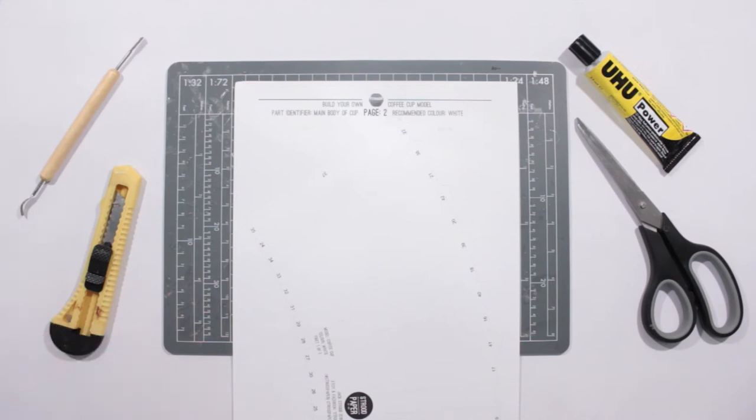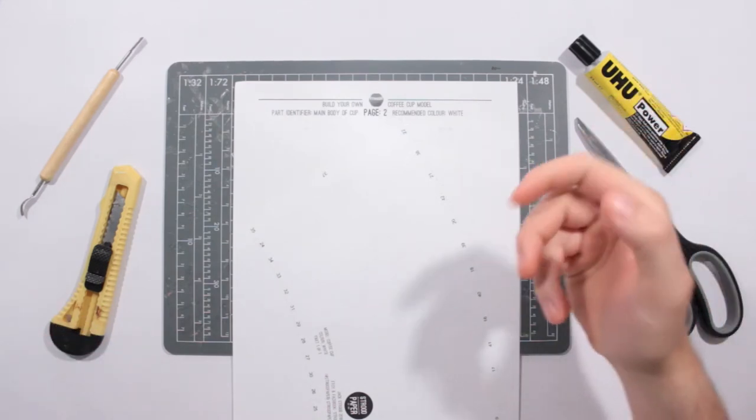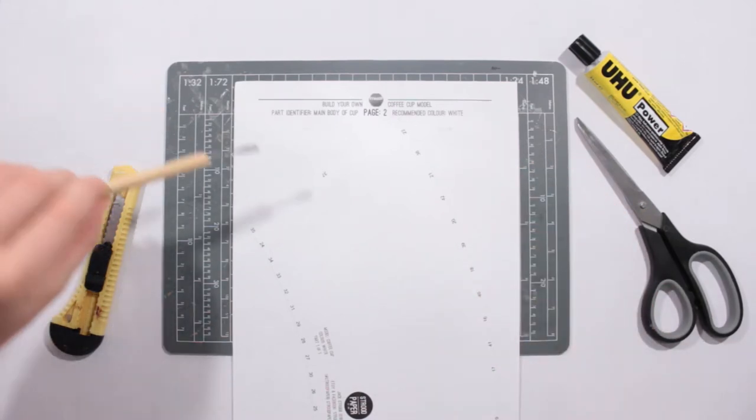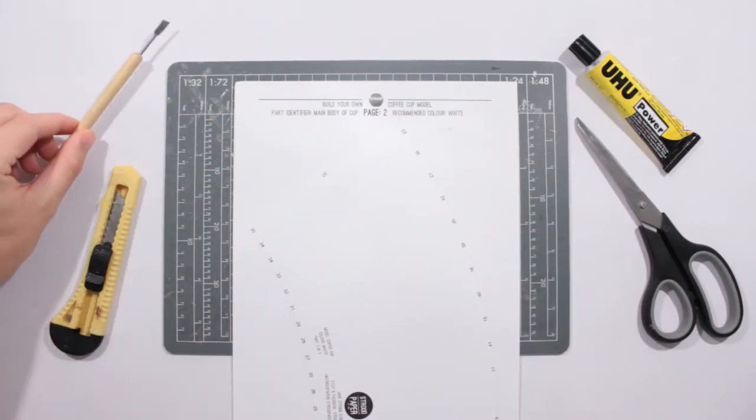The tools you need are a knife, scissors, UHU glue which is really good because it gives you a bit of movement time before it sets, and maybe a craft tool to push the tabs in when you're done.